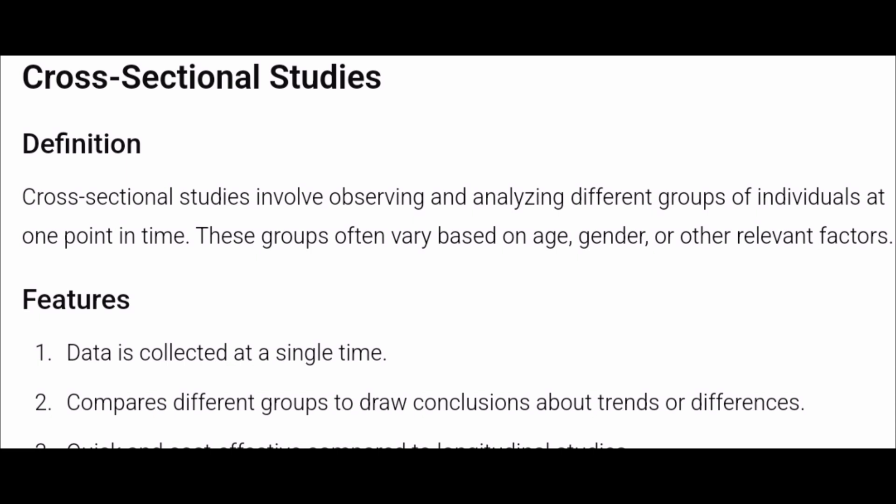So what do we mean by cross-sectional studies? Definition: cross-sectional studies involve observing and analyzing different groups of individuals at one point in time. These groups often vary based on age, gender, or other relevant factors. When you are studying a group of children — maybe 6 students, 10 students, 100 students — you are studying them all at one time.